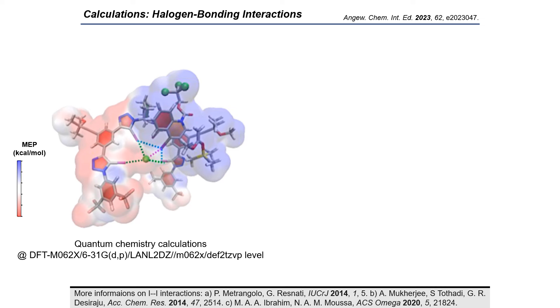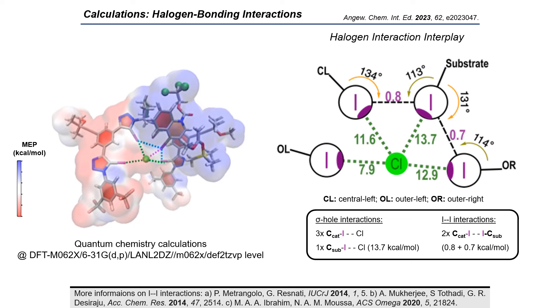To gain a better insight into what is happening in this reaction, computational studies were done. Here on the left side, you can see a calculated map of the transition state. But to see the key interactions better, we are looking to the right side.